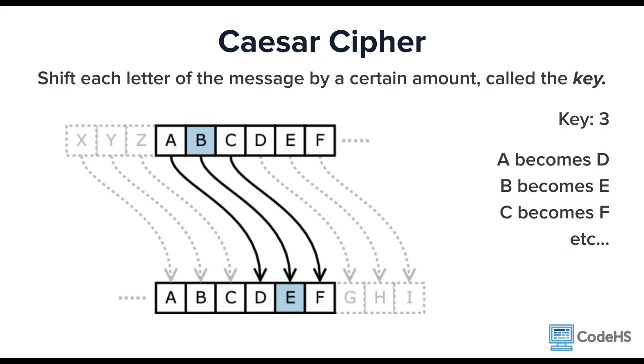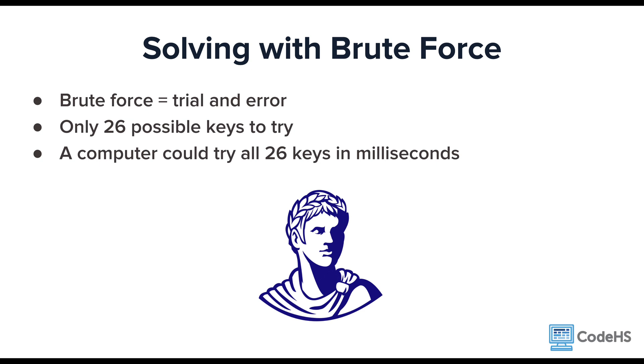We learned about the Caesar cipher earlier in the lesson. This is a historical substitution cipher where each letter is shifted by a key value. As you might have guessed already, this isn't a really strong cipher.